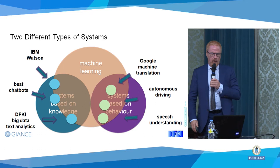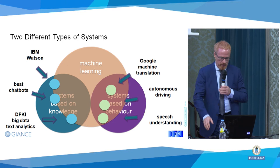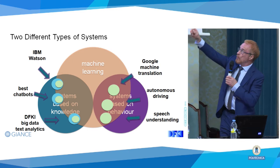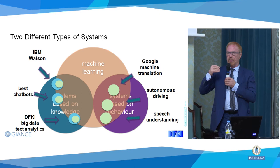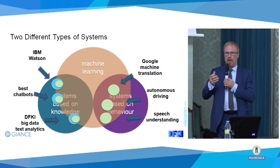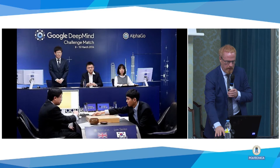On the other side, there are systems like IBM Watson, already mentioned, or the very best chatbots. There are silly chatbots that work without knowledge, but the real good chatbots have some knowledge. Our system on big data text analytics is similar. These systems that have knowledge also use behavior learning, because the NLP part — the parsing, dependency parsing, lexical lookup, named entity recognition — all of that is now neural network based. So it's a mix, but not really fully integrated.